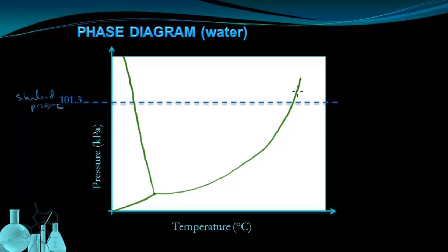Now the lines, or the curves in the Phase Diagram, separate the area into three regions. We have the solid region over here, which is ice for water. We have the liquid region in the middle, which is just called water. And we have the gas region over here, which we call vapor.